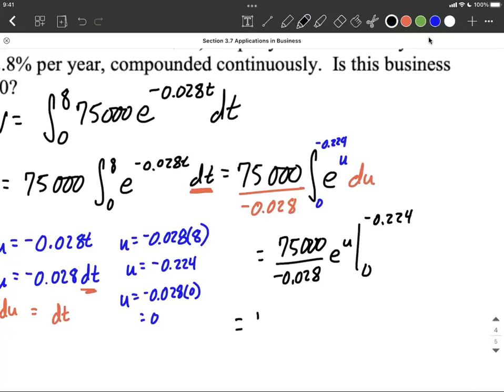Alright, to finish this up, and I know I could go ahead and get my calculator out and get a different number out here, but I'm just going to leave it as is. We need to evaluate E raised to the negative 0.224, minus E to the 0 power, as we evaluated our bounds of integration.